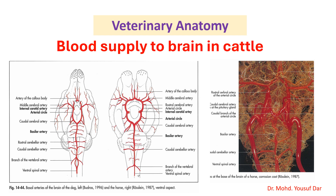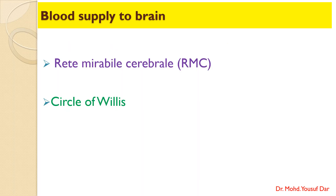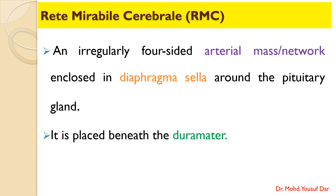Today's topic is blood supply to the brain in cattle. Before coming to the main topic, we must understand what the RMC is — an important structure that plays a very important role in supplying blood to the different parts of the brain. We will then discuss the Circle of Willis. The Rete Mirabile Cerebrale (RMC) is an irregularly four-sided arterial network or arterial mass.